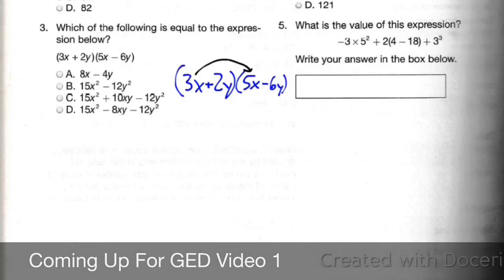Double distribution is how I would answer this, where I distribute my 3x to my 5x and my negative 6y.